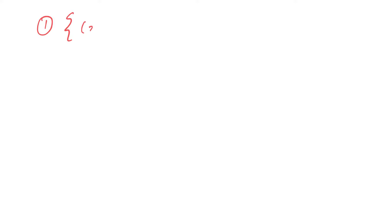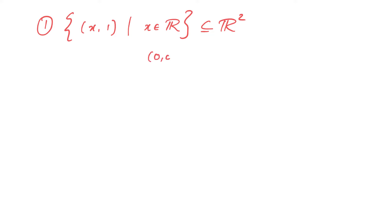Let us now look at some subsets that are not vector spaces. The first example is the set of all (x, 1) such that x belongs to R. This is a subset of R², but we claim it is not a subspace. Why? Because the additive identity (0, 0) does not belong to this set, and thus this set is not a vector subspace.